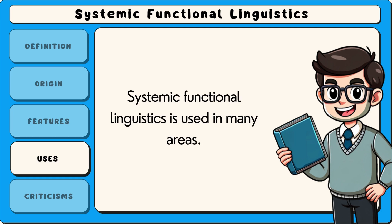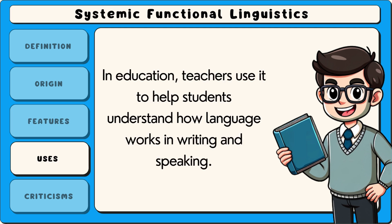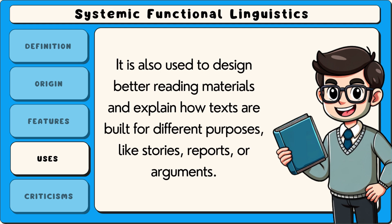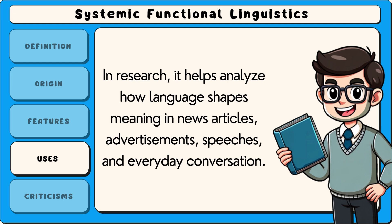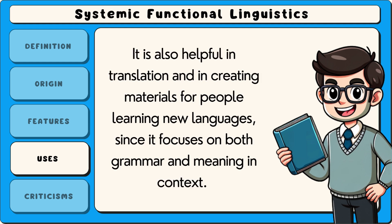Systemic functional linguistics is used in many areas. In education, teachers use it to help students understand how language works in writing and speaking. It is also used to design better reading materials and explain how texts are built for different purposes, like stories, reports, or arguments. In research, it helps analyse how language shapes meaning in news articles, advertisements, speeches, and everyday conversation. It is also helpful in translation and in creating materials for people learning new languages, since it focuses on both grammar and meaning in context.